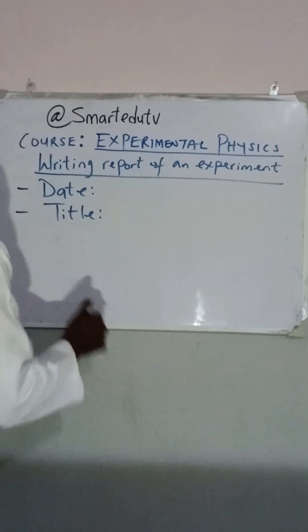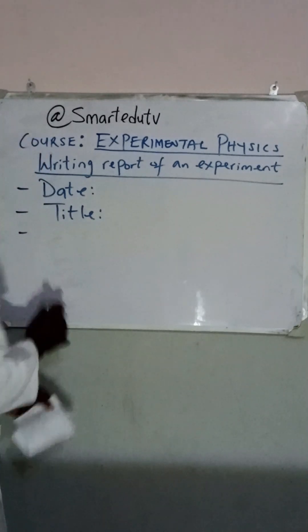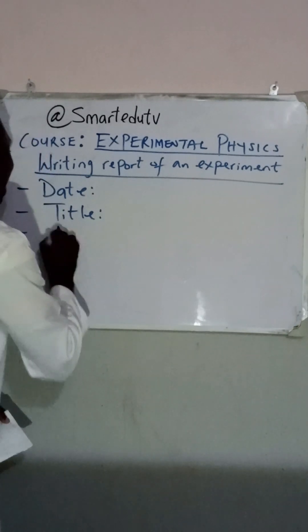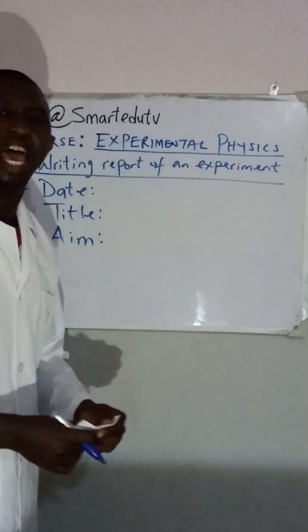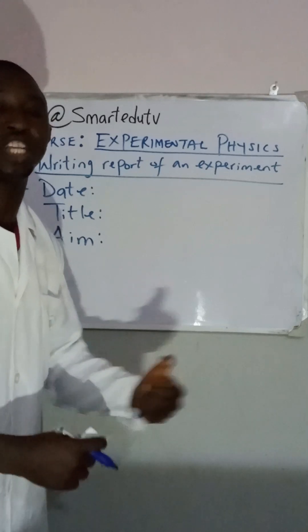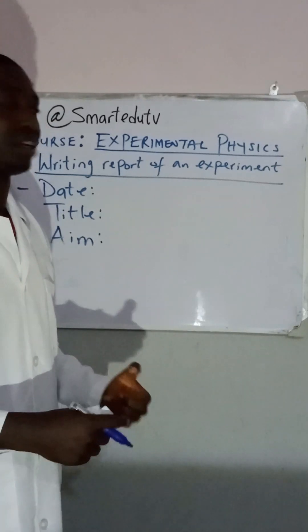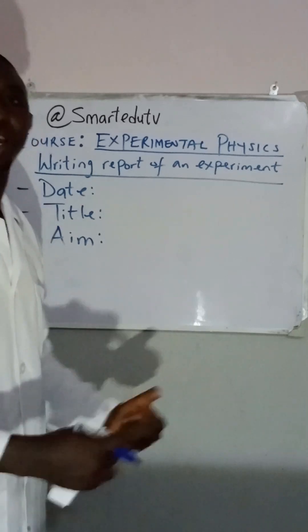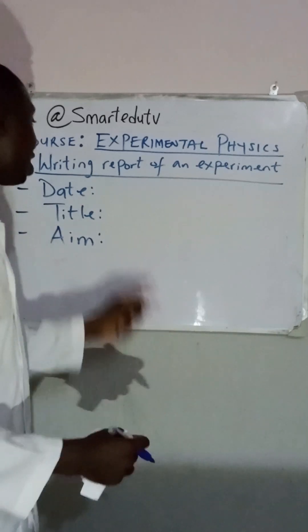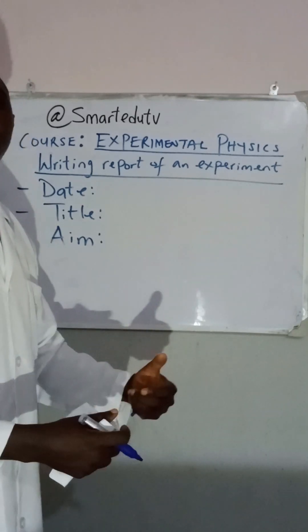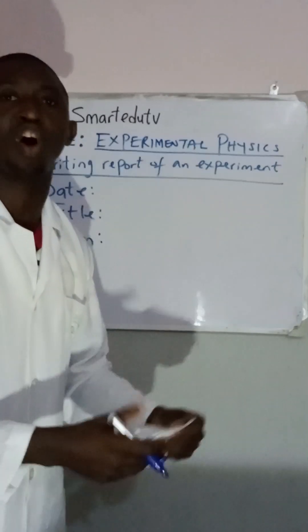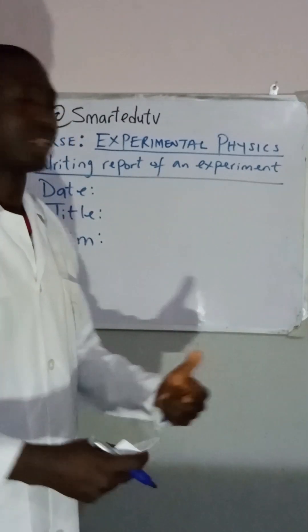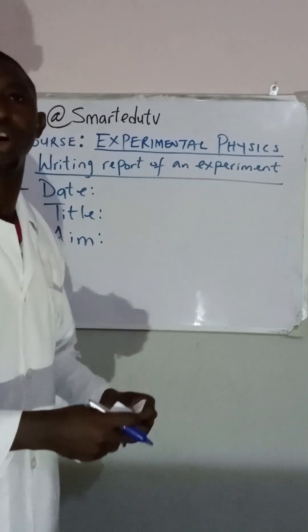After writing the title, the next thing we are going to write is the aim — the aim of the experiment. Every experiment has its own aim; it is aimed towards a particular thing. For instance, in the experiment that involves refraction through a glass block, the aim of that experiment is to verify the laws of refraction.